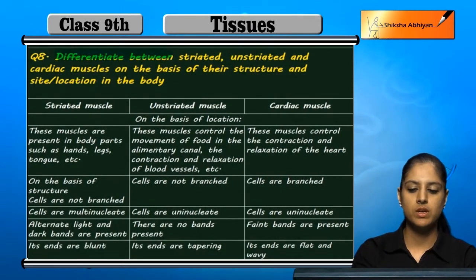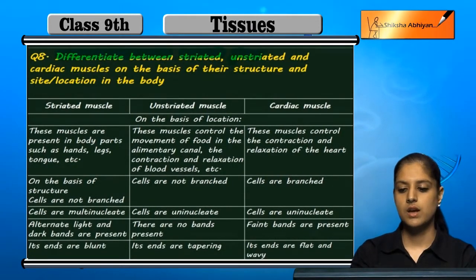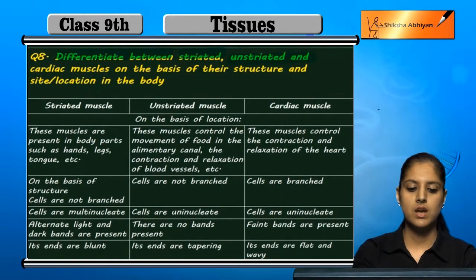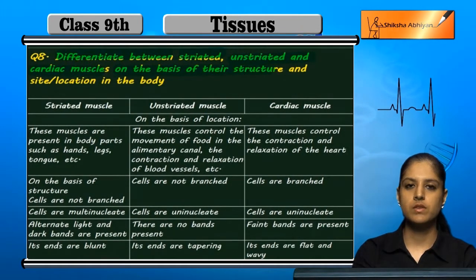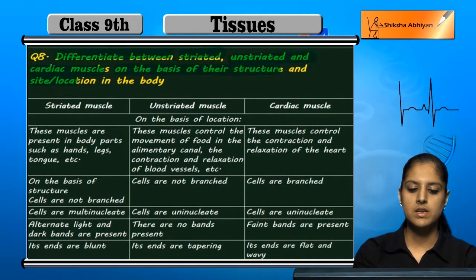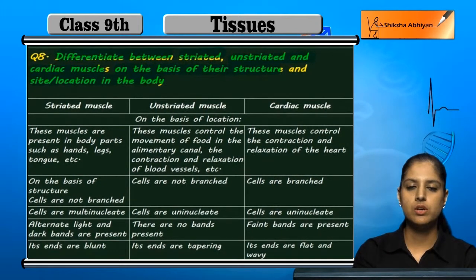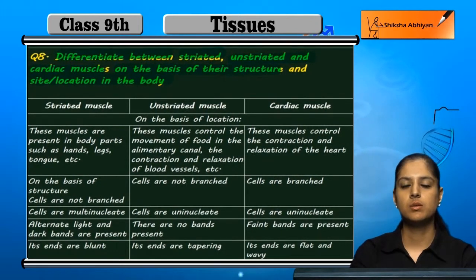Differentiate between striated, unstriated and cardiac muscles on the basis of their structure, site and location in the body.